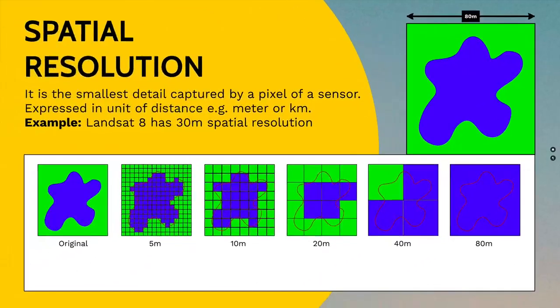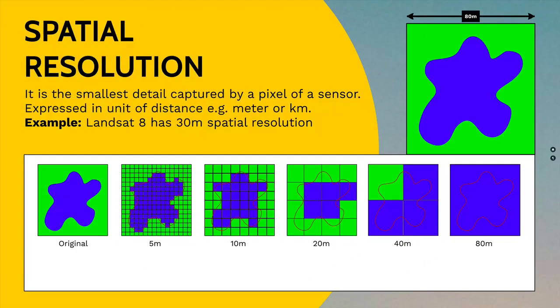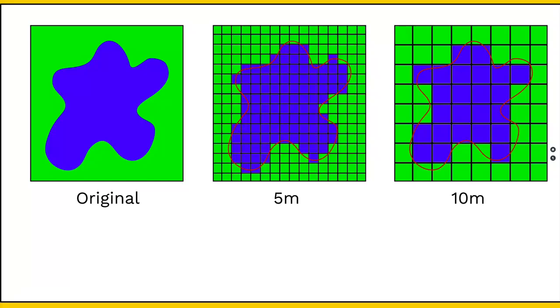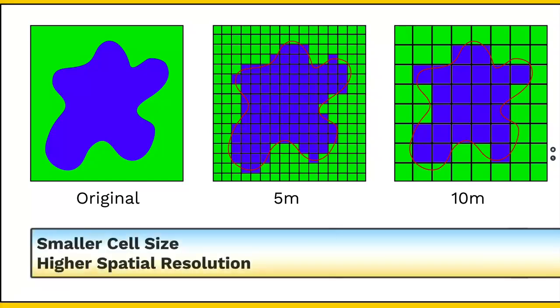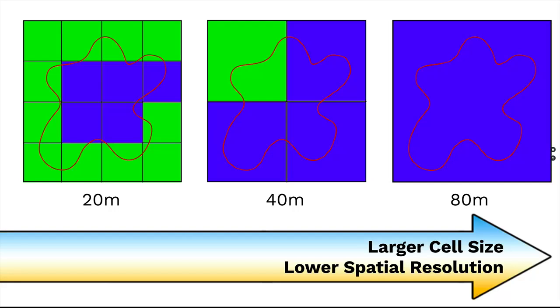With these examples, we can finally conclude that when spatial resolution is high or the pixel size is small, the data loss is least. While in case of lower spatial resolution, when the pixel size is large, there is a huge loss of data.